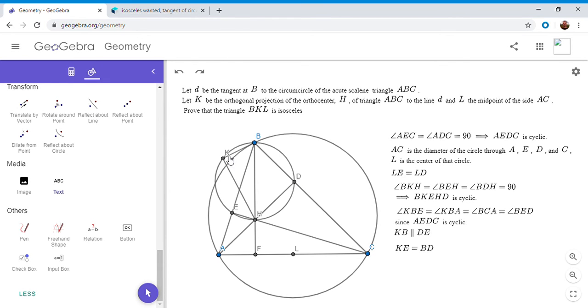parallel chords in a circle cut off equal segments. So we have to have KE equals BD, because whenever you have two parallel chords in a circle, if you connect the four points, they have to form an isosceles trapezoid by symmetry. So KE has to equal BD.